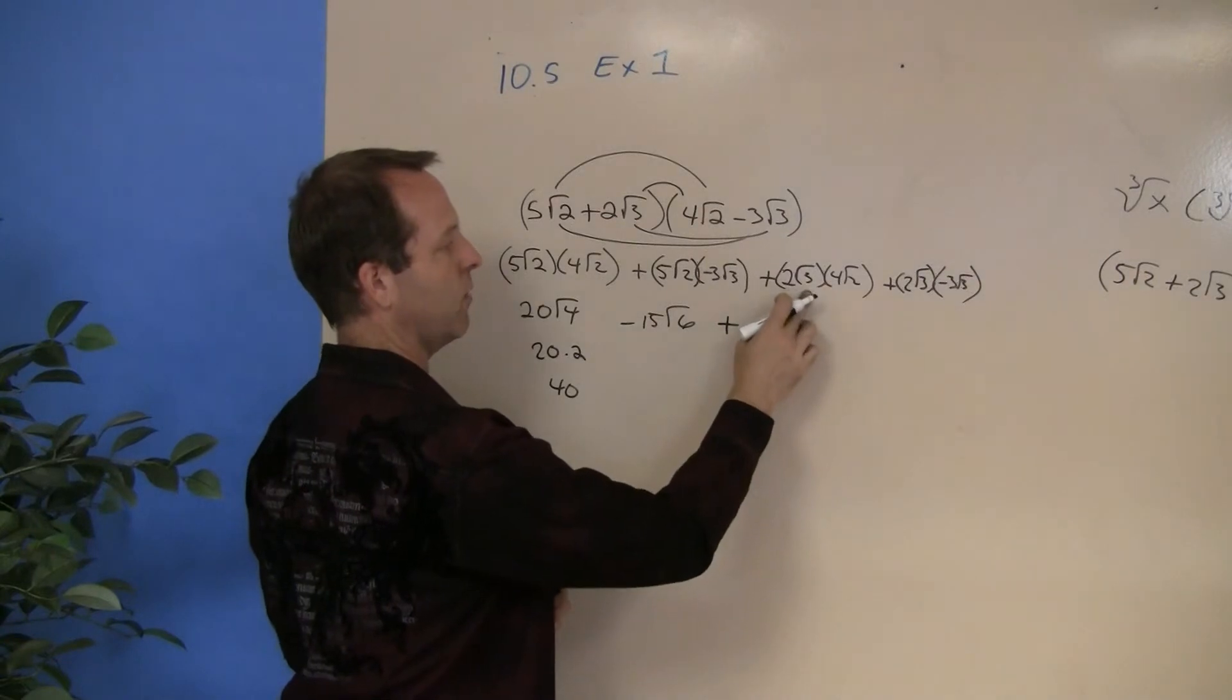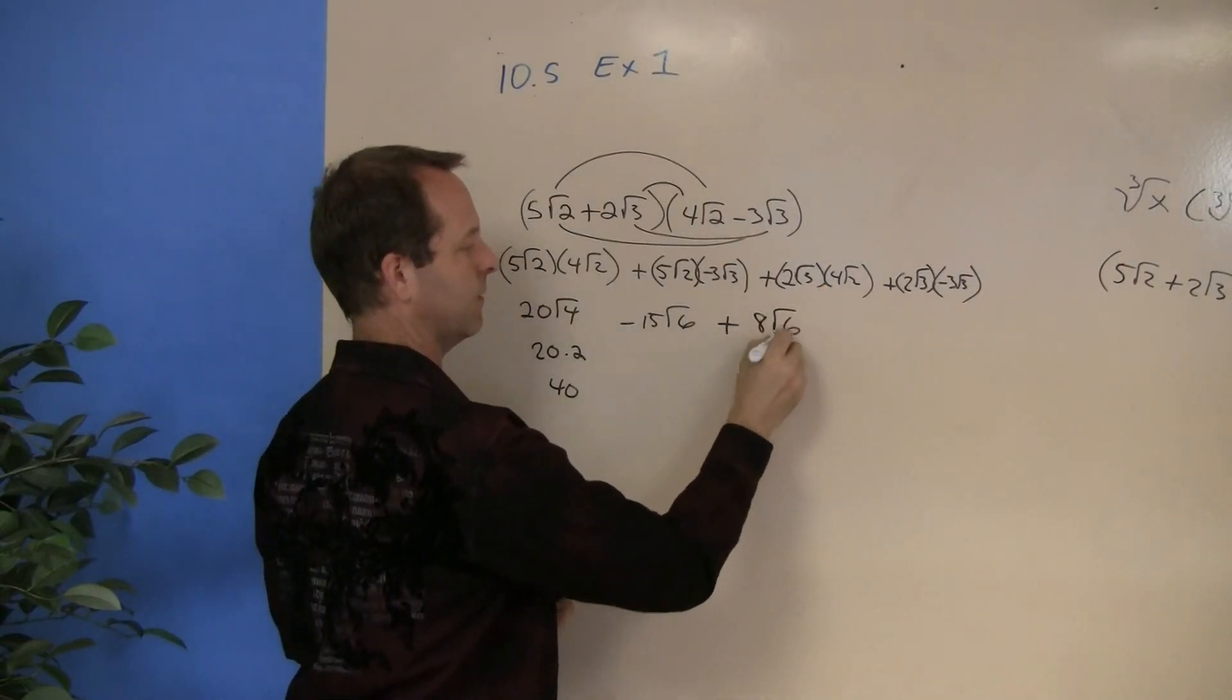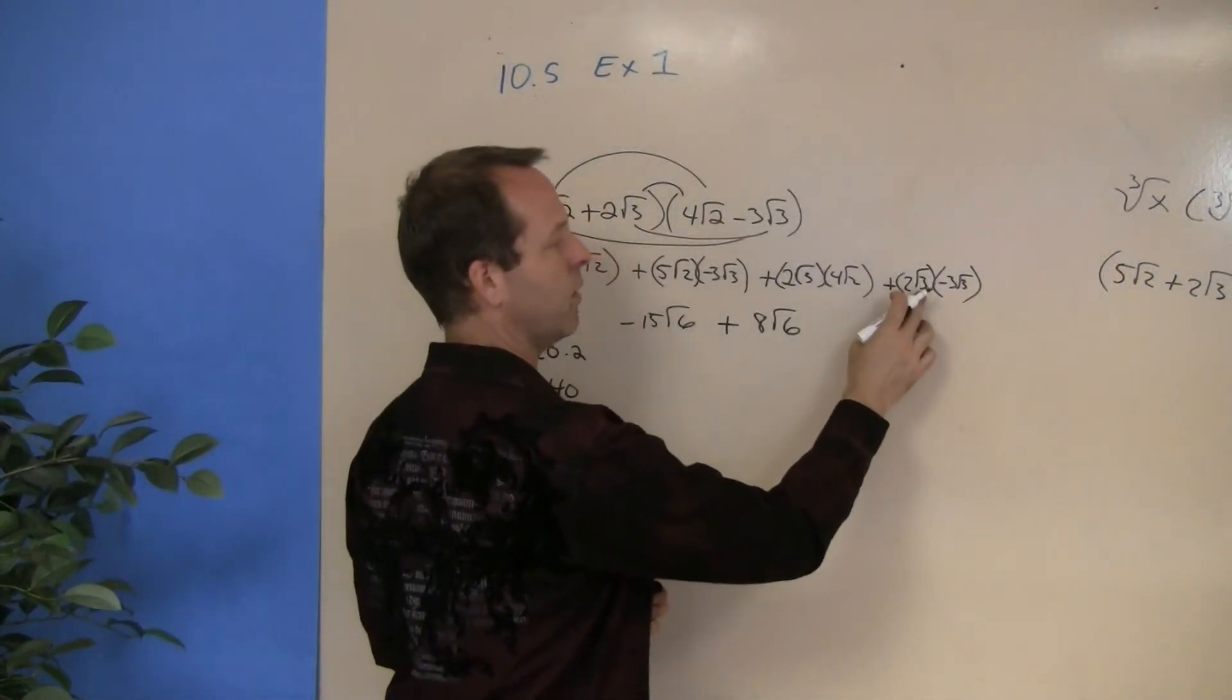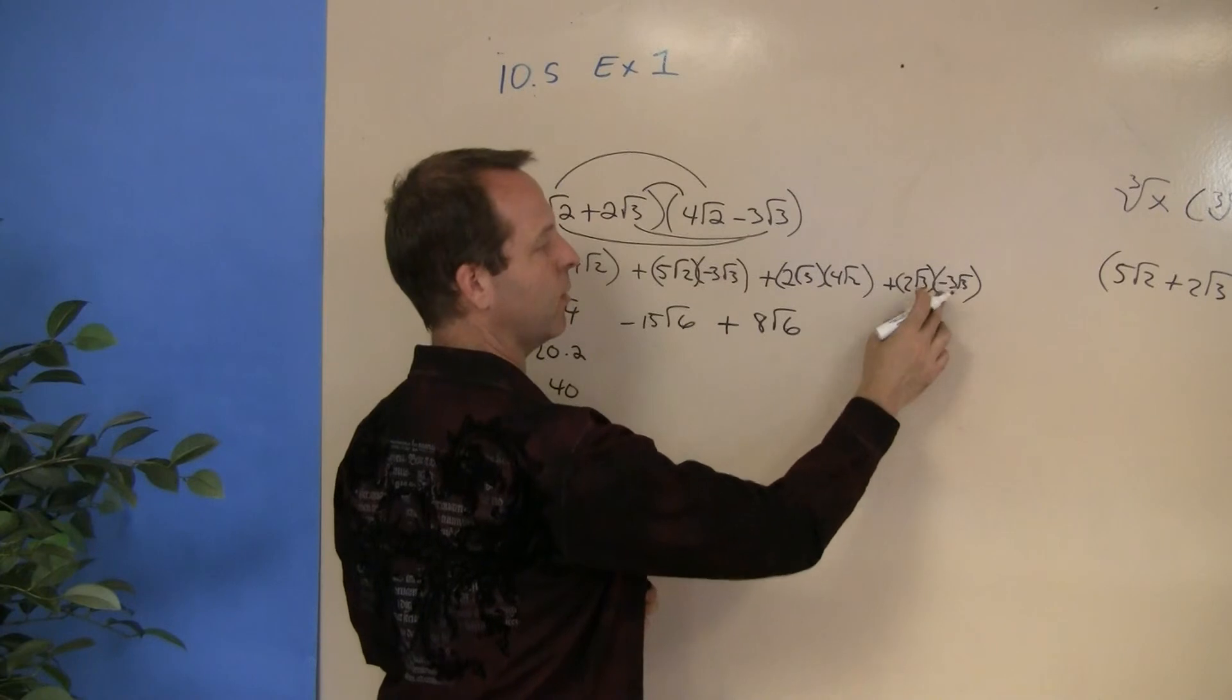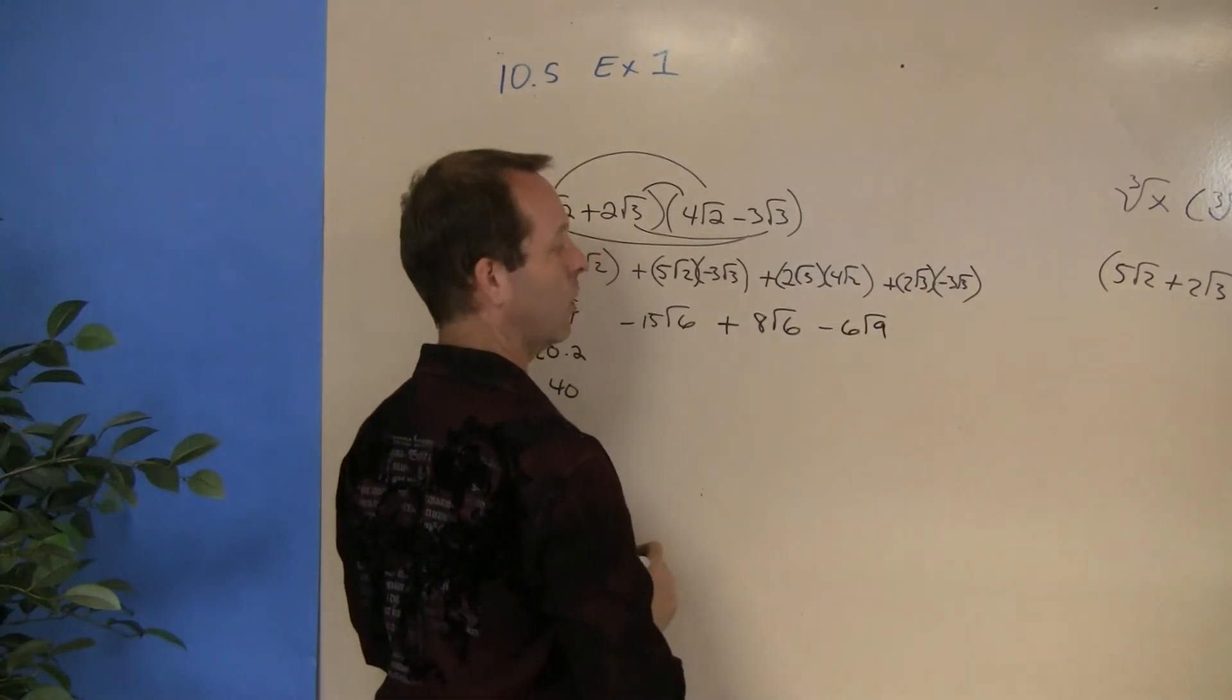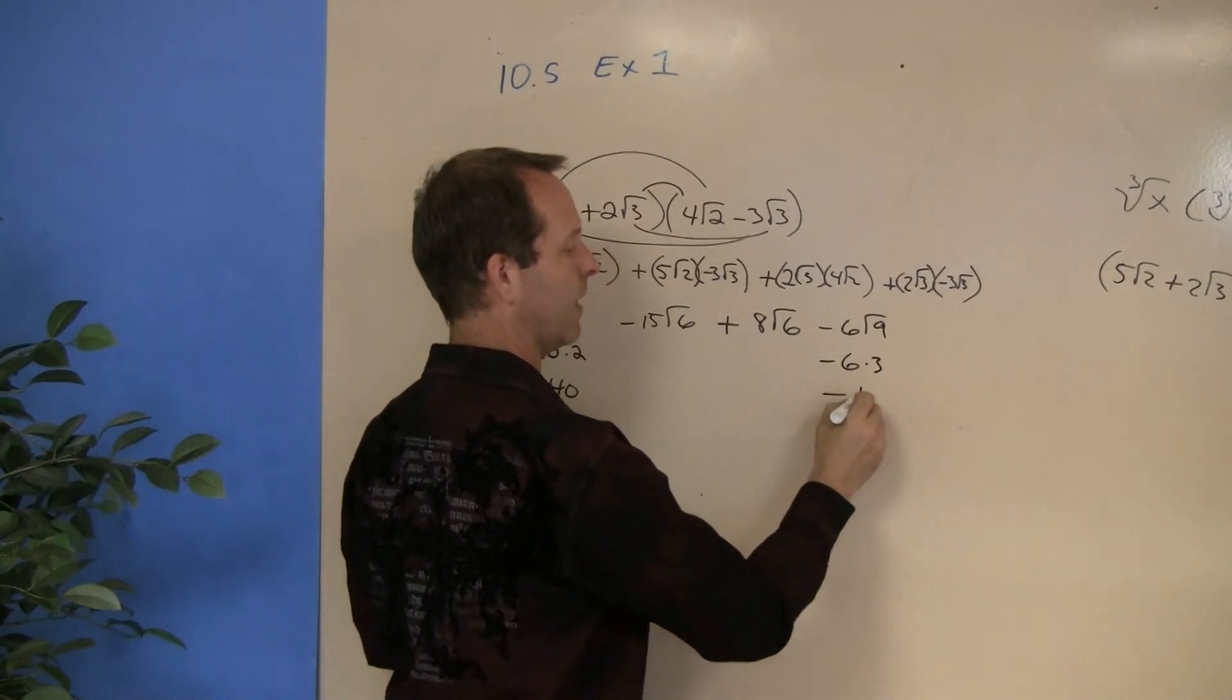Plus, 2 root 3 times 4 root 2. That becomes 8 root 6. Can't reduce that down any further. And then, 2 root 3 times a negative 3 root 3. And that gives me a negative 6 root 9, or a negative 6 times a 3, or a negative 18.